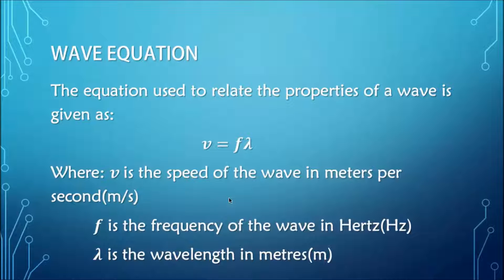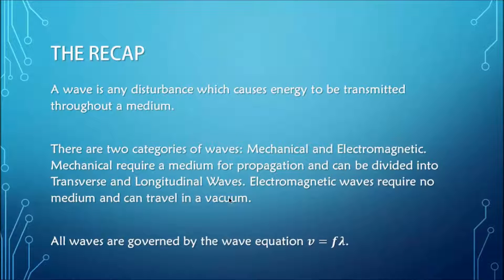To recap: a wave is any disturbance which causes energy to be transmitted throughout a medium. There are two categories of waves — mechanical waves and electromagnetic waves. Mechanical waves require a medium for propagation and are further divided into transverse waves and longitudinal waves. Electromagnetic waves require no medium and can travel in a vacuum. All waves are governed by the wave equation.